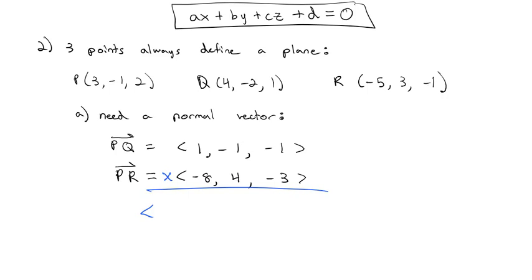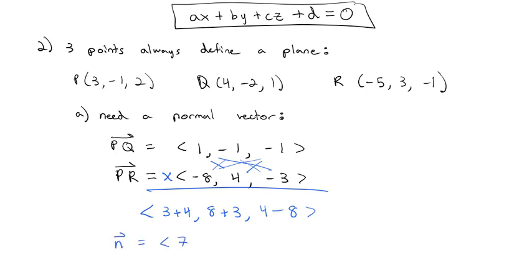To get a vector normal to both of these — since both vectors lie on the plane — we cross them. Ignoring the first column: (−1)(−3) − (4)(−1) = 3 + 4 = 7. Ignoring the middle column going backwards: (−1)(−8) − (1)(−3) = 8 + 3 = 11. Ignoring the third column: (1)(4) − (−1)(−8) = 4 − 8 = −4. So our normal vector is (7, 11, −4).